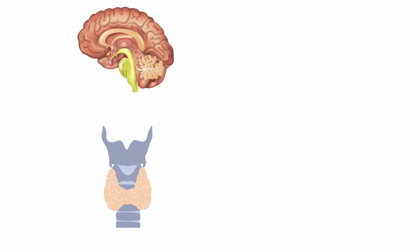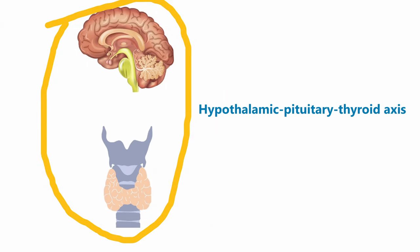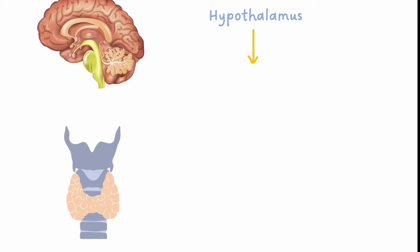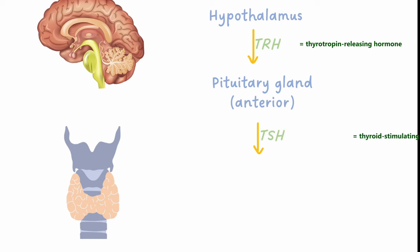To understand thyroid function tests, we first need a basic understanding of how the hypothalamic pituitary thyroid axis works. The hypothalamus in the brain will secrete the hormone TRH, which stimulates the pituitary gland, also in the brain, to secrete TSH. TSH will then travel in the blood until it reaches the thyroid gland.